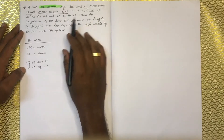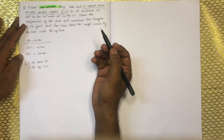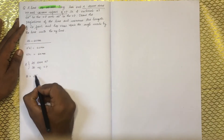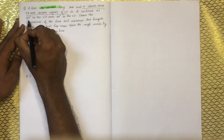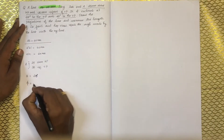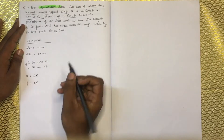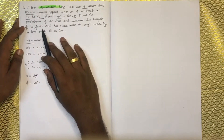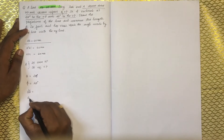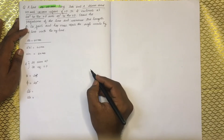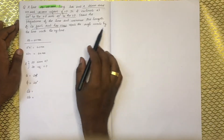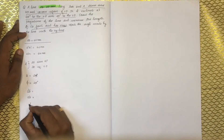Line AB is inclined 35 degrees to HP and 45 degrees to VP. Draw the projections of the line and measure the length of its front and top views. Mark the angles alpha and beta made by the line with the reference planes.